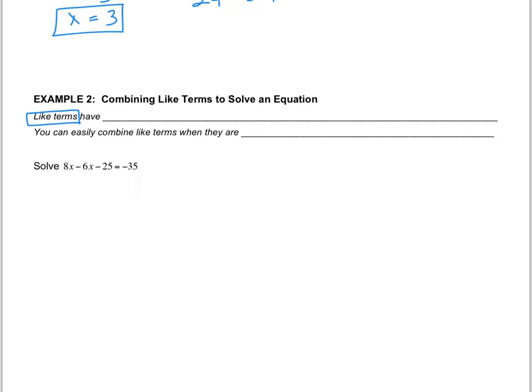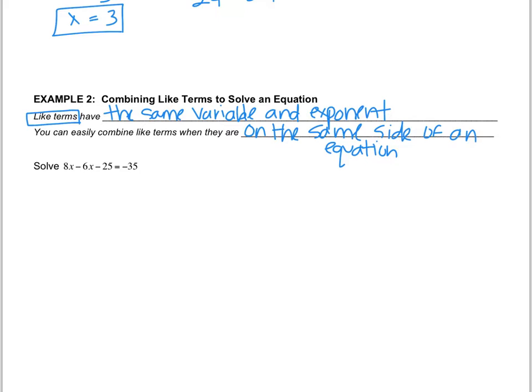When you're combining like terms you can easily combine them when they are on the same side of the equation. In the next lesson 1.3 we're going to look at equations where the like terms are on different sides of the equal sign and that takes a little more work. But when they're on the same side you can just combine them.